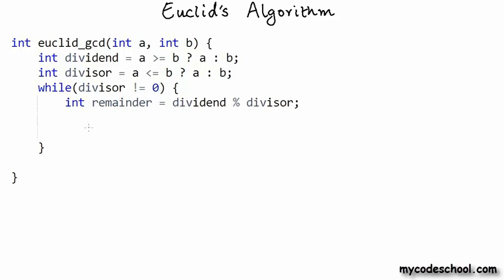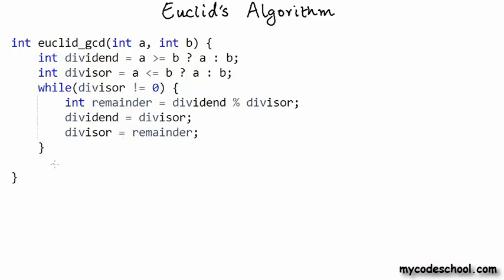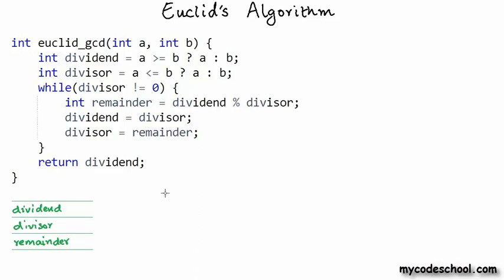We then set up the dividend and divisor for the next division operation: the dividend for the next operation is the divisor of the current operation, and the divisor for the next operation is the remainder from the current operation. When the loop exits, we know the divisor is 0 and the algorithm is complete — the GCD of A and B lies in the last dividend, so we simply return the dividend value. Now let's track the values of dividend, divisor, and remainder for an example to get a better understanding of how the algorithm works.